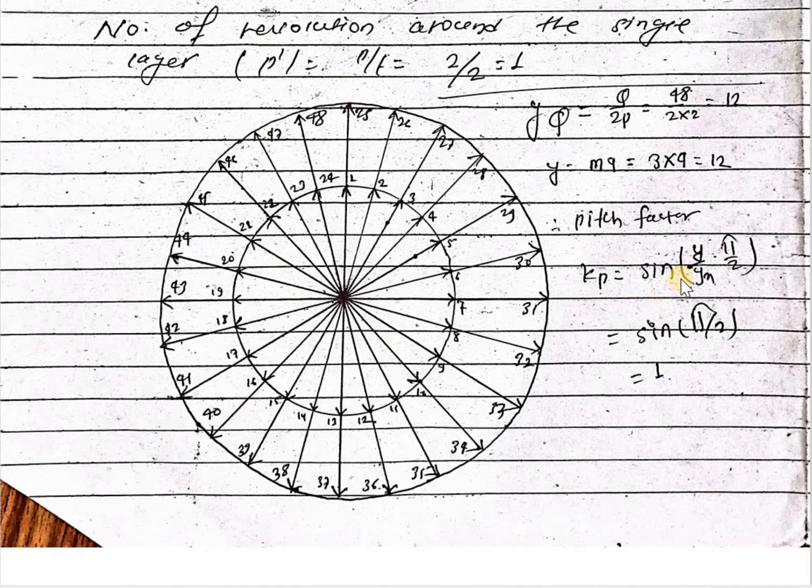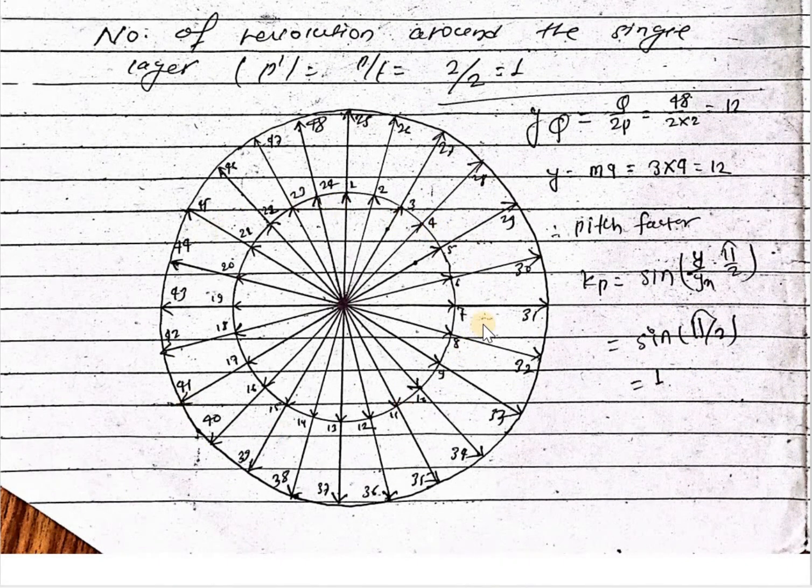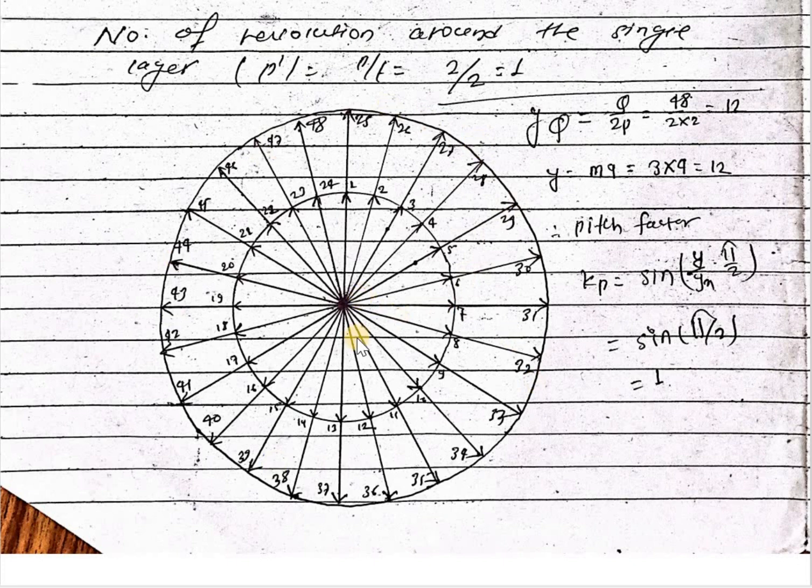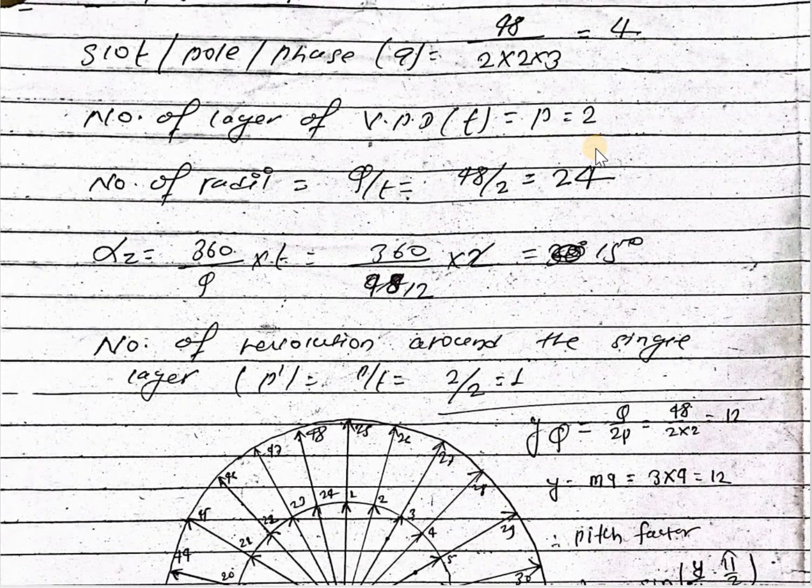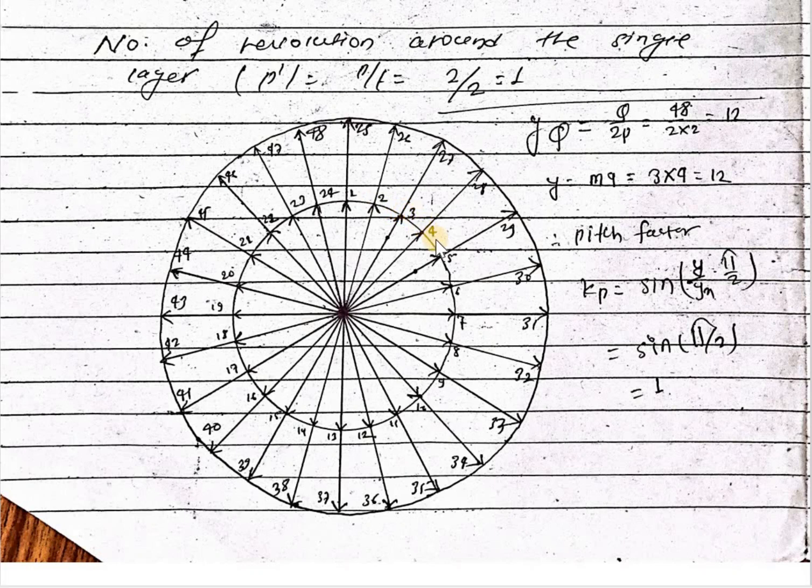Therefore pitch factor kp equal to sin y upon yq into pi by 2. So put the value y upon yq, then it is 1, so it is full p square. And this is two layer, this is one layer, and another single layer. Similarly having angle 15 degree between 1 and 2, between 2 and 3, 15 degree, 4 and 5 angle is 15 degree.